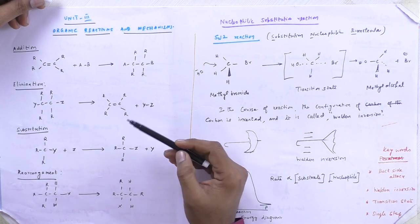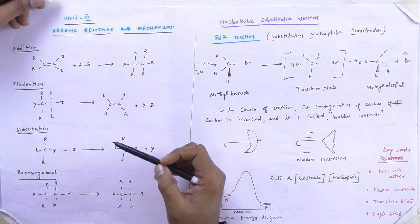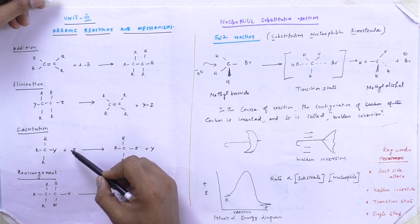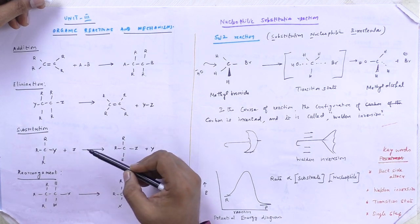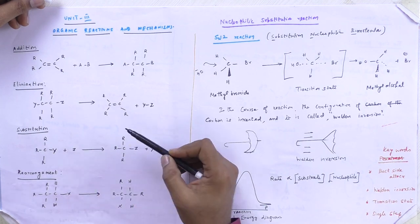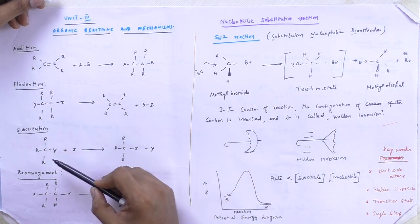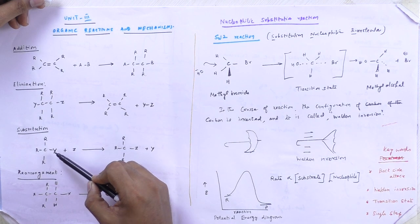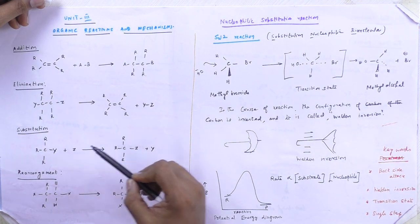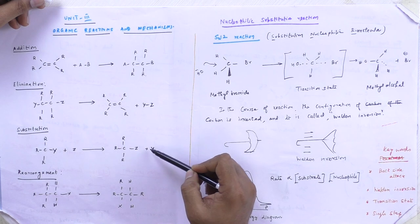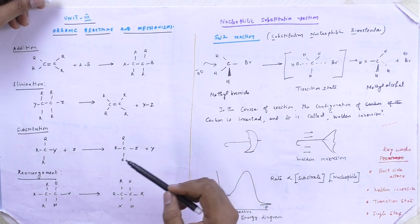Next is substitution reaction. In a substitution reaction, one molecule is simply substituted into the reactant. Here, Z is substituted into this position, the final product is formed accordingly, and Y is left behind.